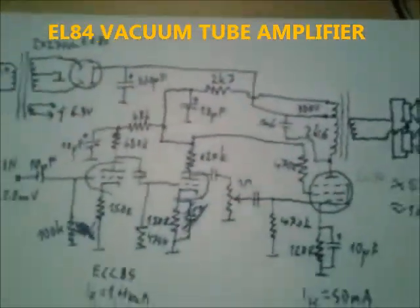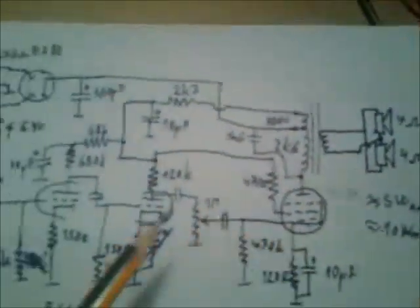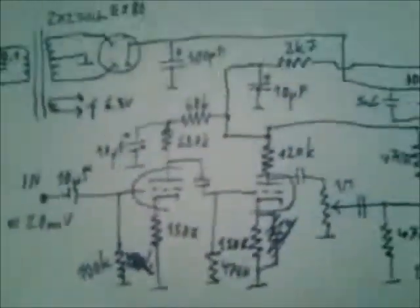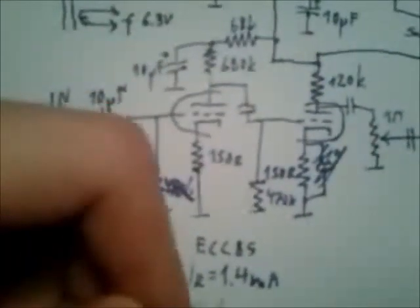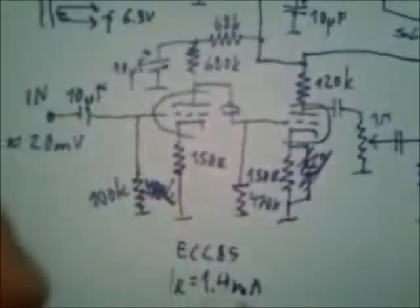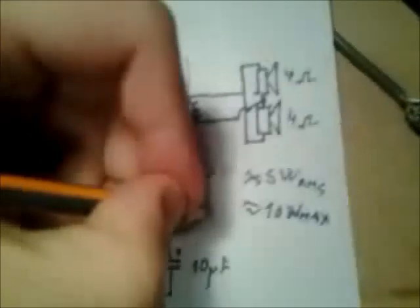This is an EL84 tube speaker amplifier for two speakers. Here we have a simple schematic with the output tube and two pre-amp tubes. This is ECC84 similar to 12AX7 which is ECC83, and this is American 6BQ5.